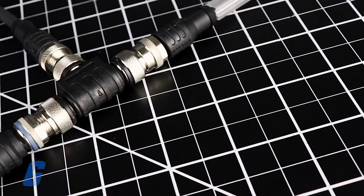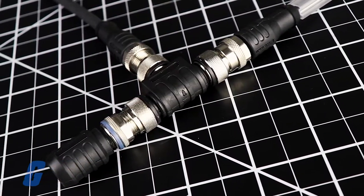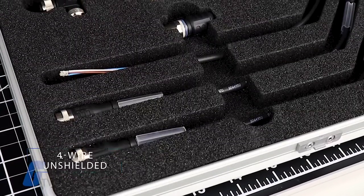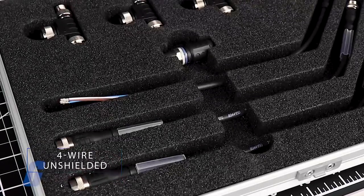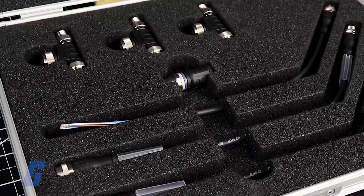Individual sensors are then connected to a mainline using a T-connector. The mainline uses a four-conductor unshielded cable, which offers additional cost savings.